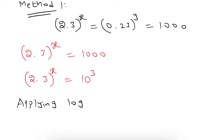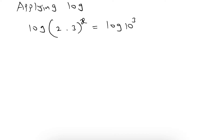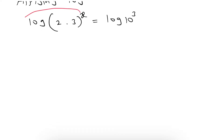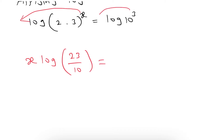Applying log on both sides: log(2.3^x) = log(10^3). The x comes to the front, giving x·log(2.3). Writing 2.3 in fractional form, 2.3 becomes 23/10. So we have x·log(23/10) = 3·log(10).